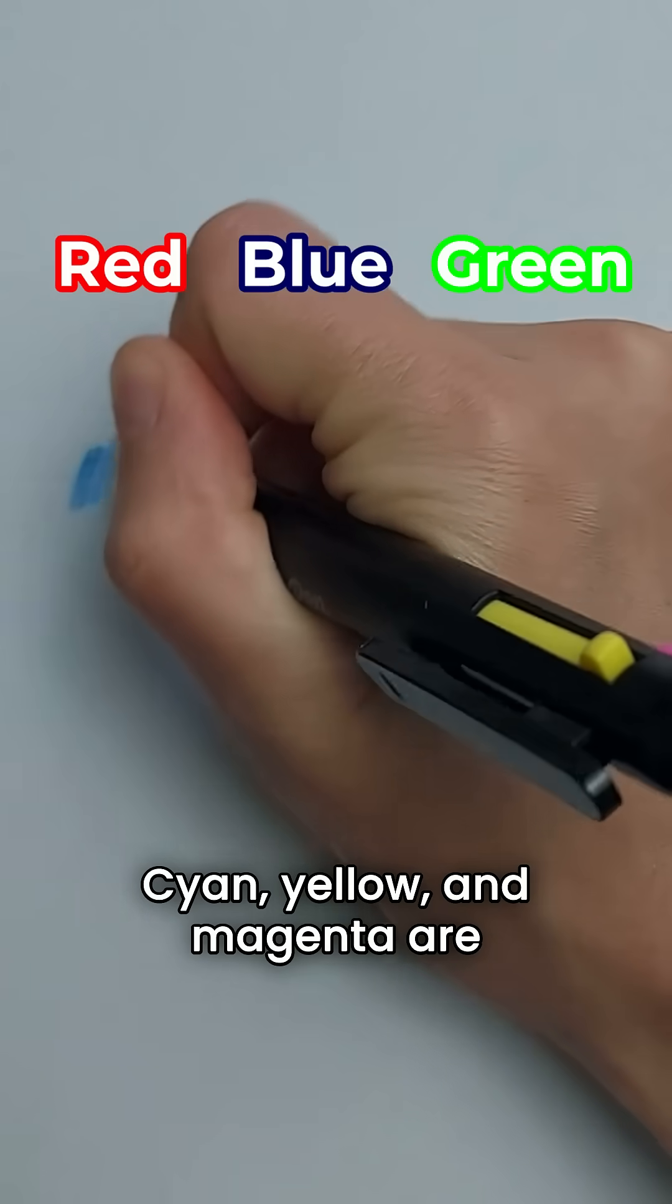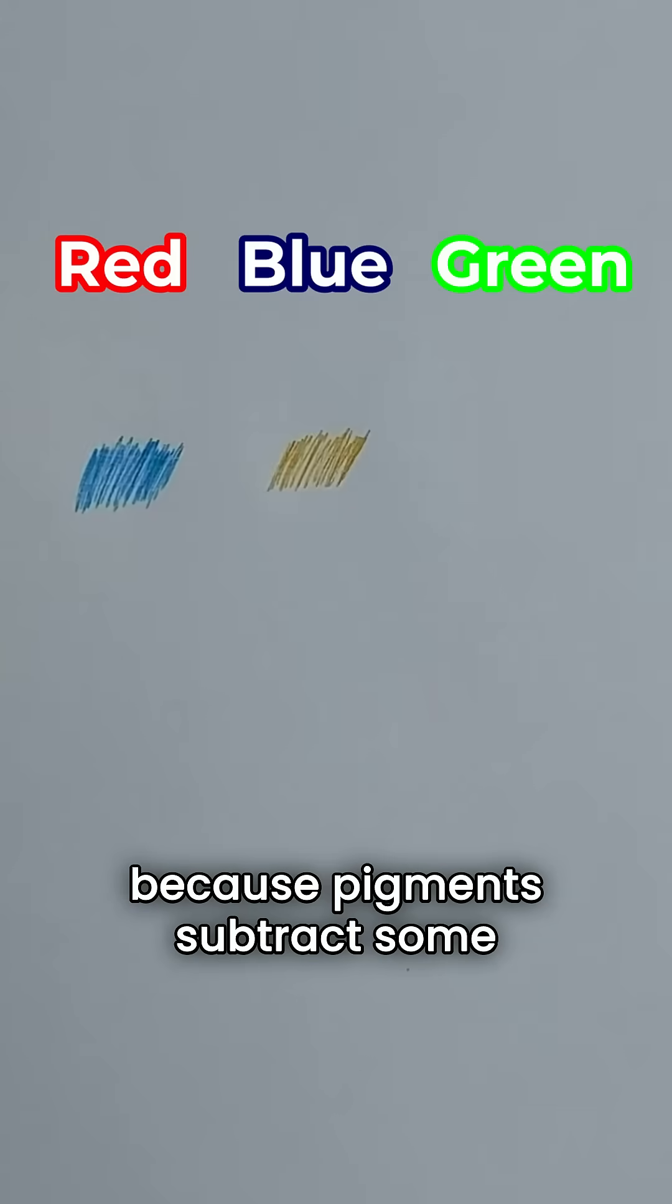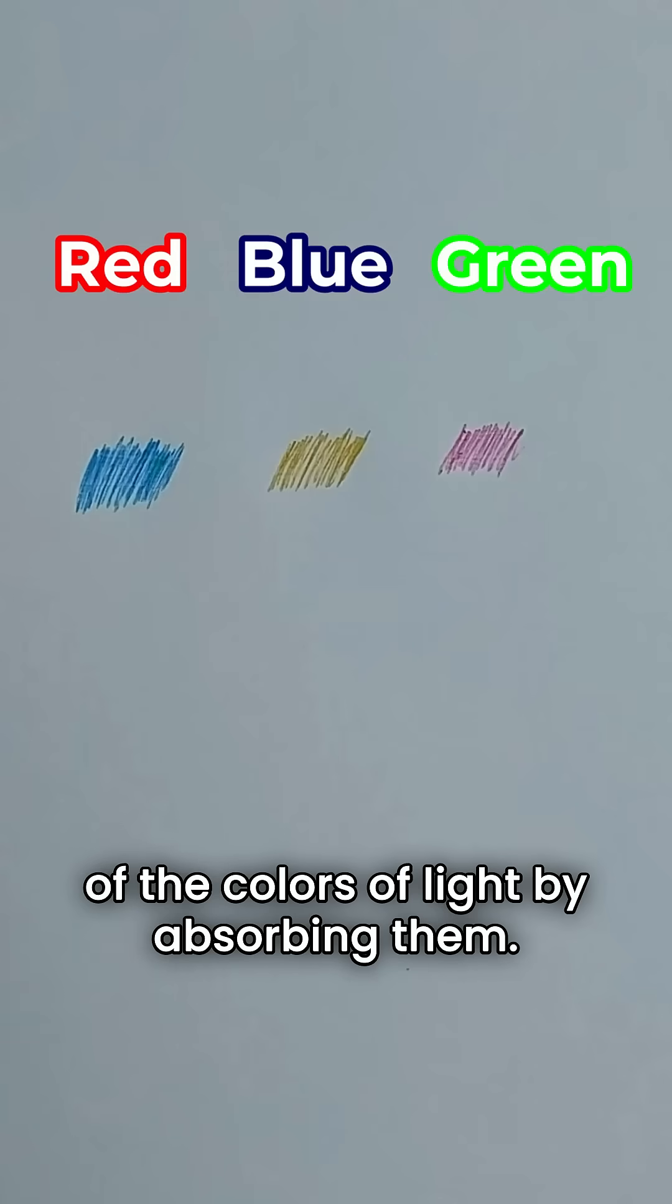Cyan, yellow, and magenta are the primary pigment colors. They're also called the primary subtractive colors because pigments subtract some of the colors of light by absorbing them.